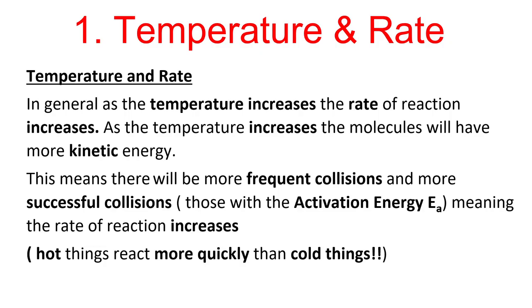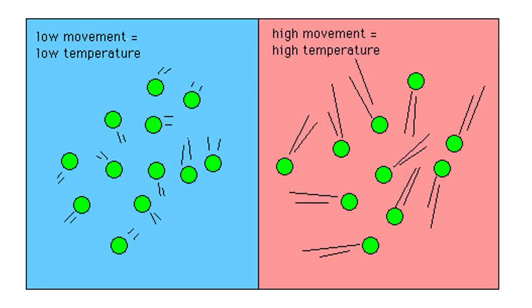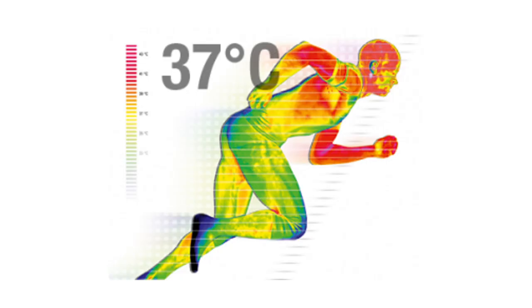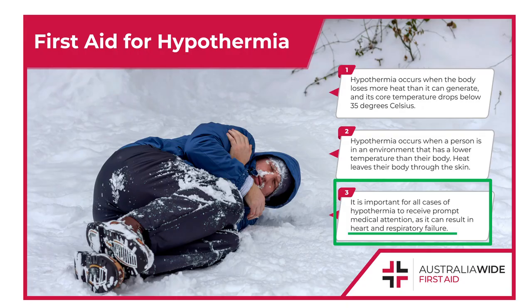The first factor is temperature and rate. In general, as the temperature increases, the rate of reaction increases. The key phrase is the molecules will have more kinetic energy. There will be more frequent collisions, more successful collisions, and the rate of reaction will increase. Hot things react more quickly than cold. Notice the graph is not directly proportional. That's why human bodies are 37°C — if you get too cold, chemical reactions don't occur quickly enough and you will have hypothermia.